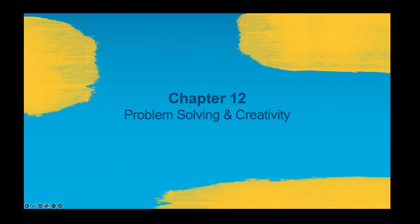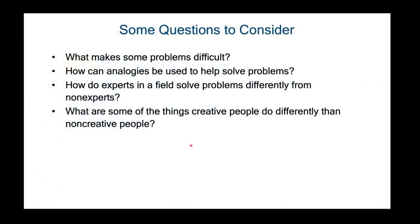We now go to Chapter 12, which is Problem Solving and Creativity. These are some of the focus questions I will try to answer: What makes some problems difficult? How can analogies be used to help solve problems? How do experts in a field solve problems differently from non-experts? And lastly, what are some of the things that creative people do differently than non-creative people?